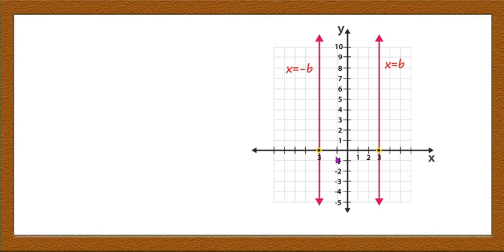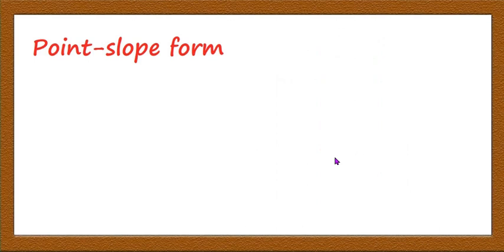You should remember these equations of horizontal and vertical lines. Now I will come to the important derivations of the equation of a straight line. The first one is the point-slope form.